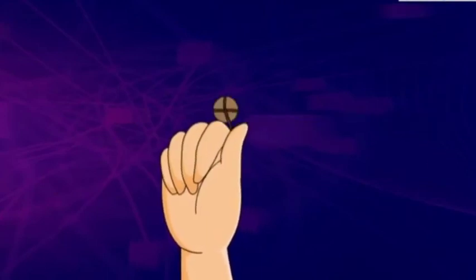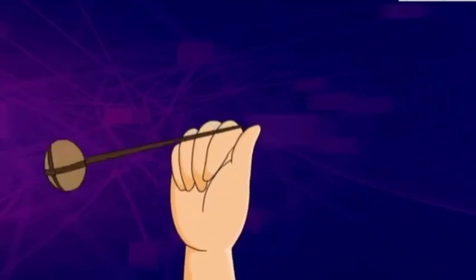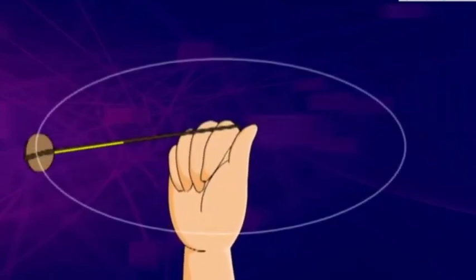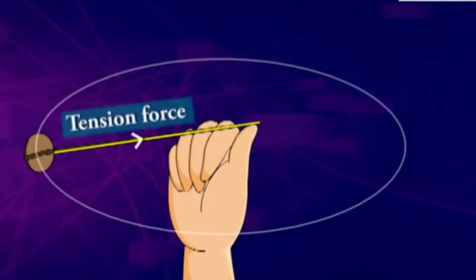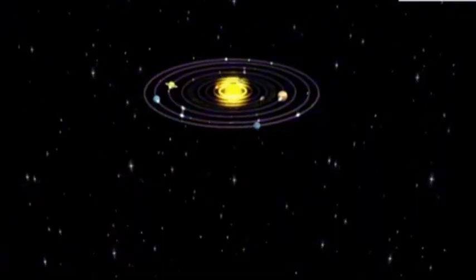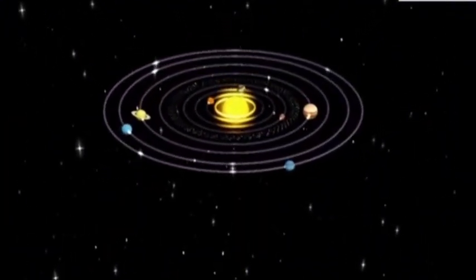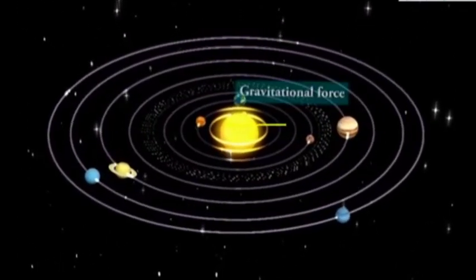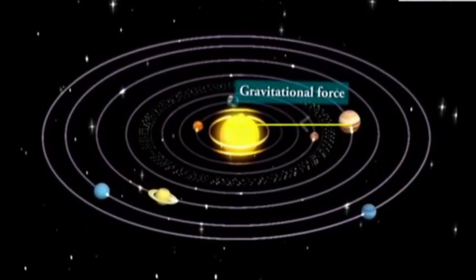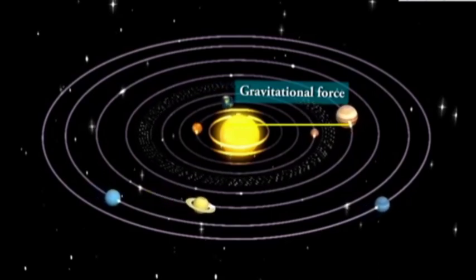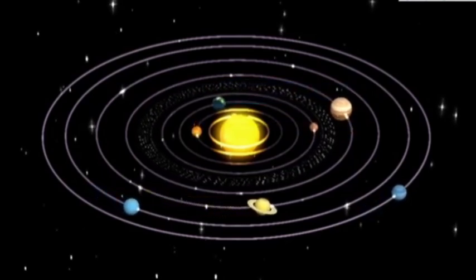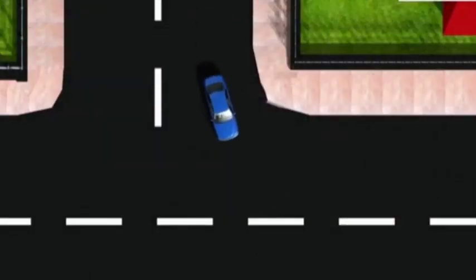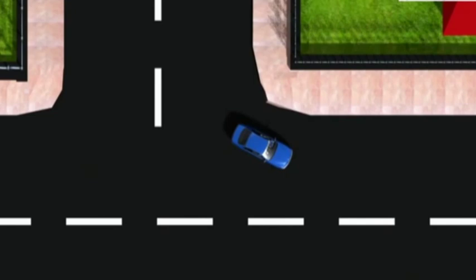For a stone rotated in a circle by a string, the centripetal force is provided by the tension in the string. The centripetal force for motion of a planet around the sun is the gravitational force on the planet due to the sun. For a car taking a circular turn on a horizontal road, the centripetal force is the force of friction.